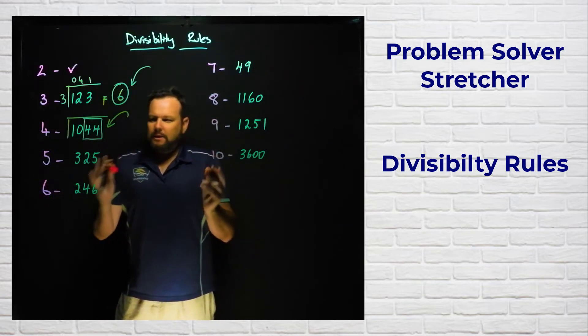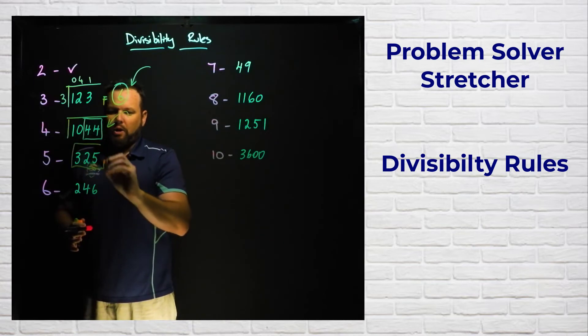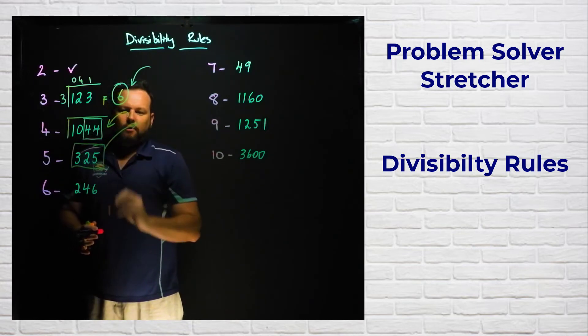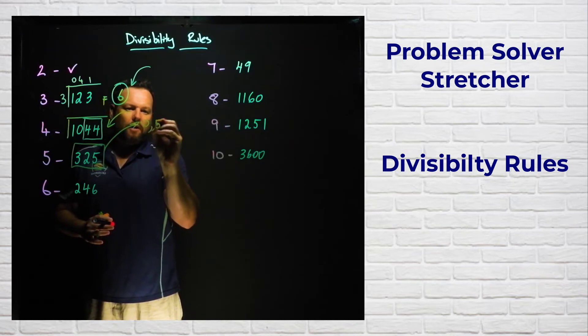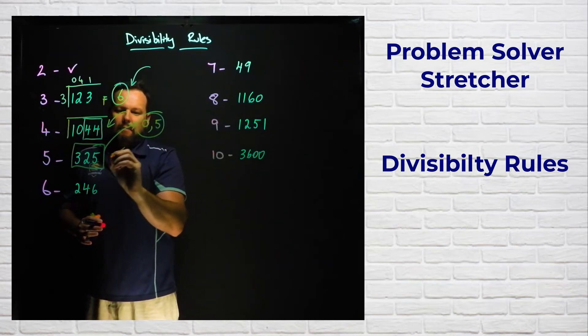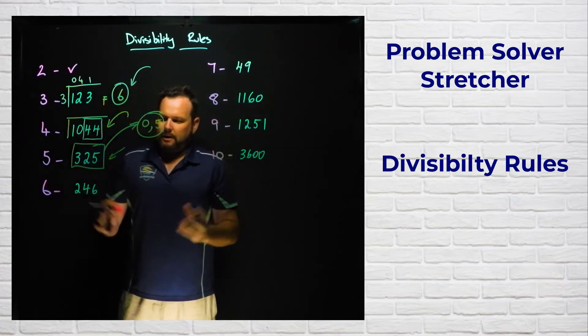Five, simple one. This is one that you should probably already know, but the divisibility rule for five is if it ends in a zero or a five, that means that the number is divisible by five. It's pretty simple.